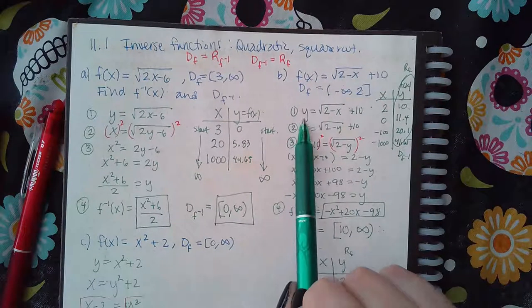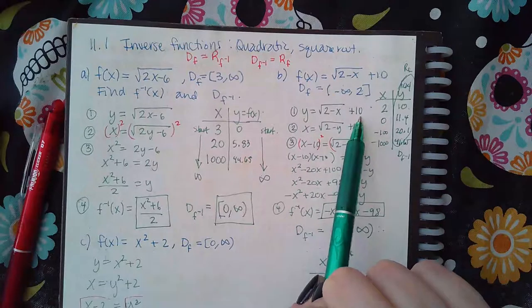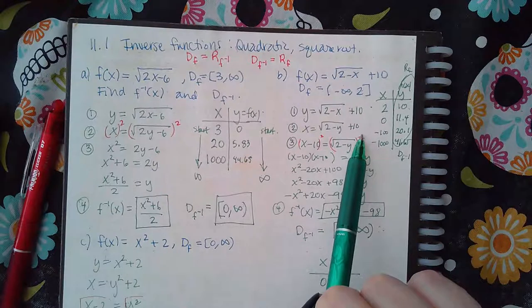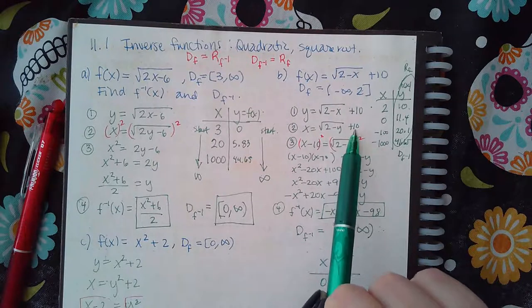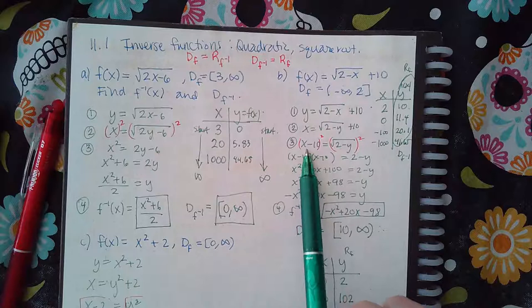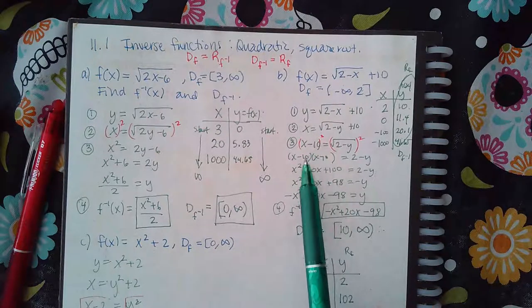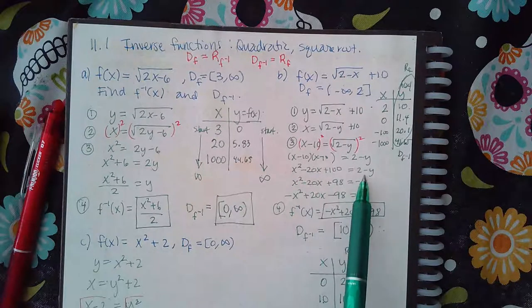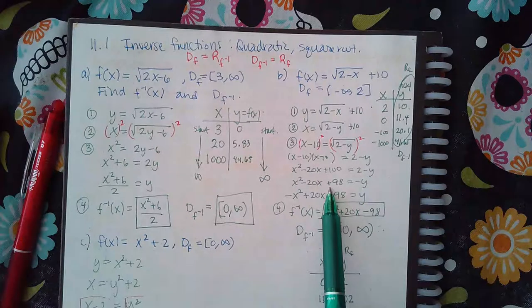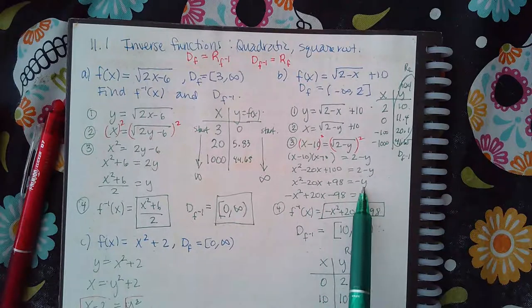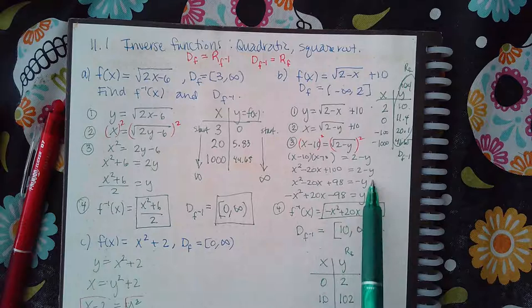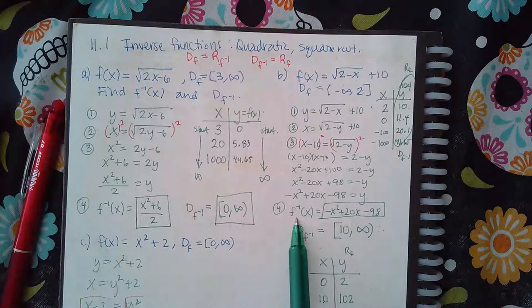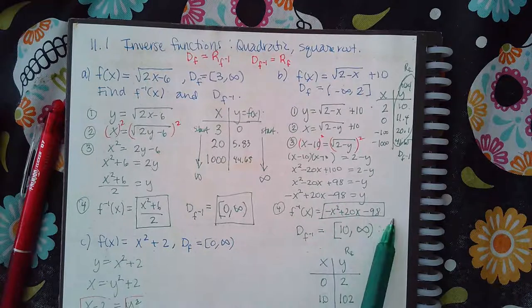Change the f of x notation to y. Notice that the rest of it's the same. Then interchange the x's and the y's. So now you get this equation. And then start solving for y. So first I got to get the square root by itself by subtracting 10 from the other side. Then I got rid of the square root by squaring both sides. And then in order to square this, I ended up with this. And then I subtracted 2 on both sides. So I ended up with this equation. And then I divided by negative 1, which ends up changing the sign of every single term on both sides. Now that I had y all by itself, I could change that back into f inverse and then put this as the answer.